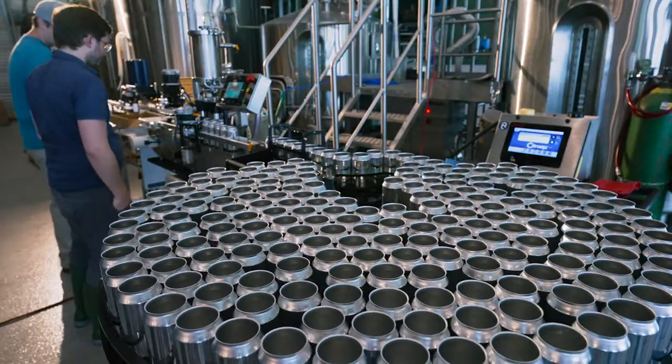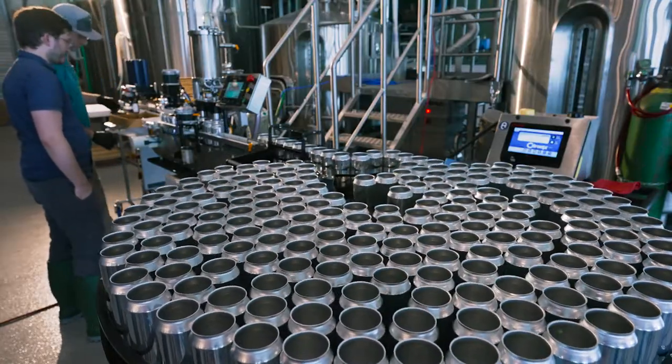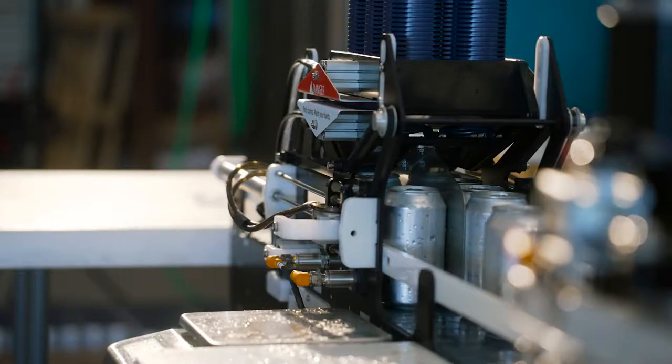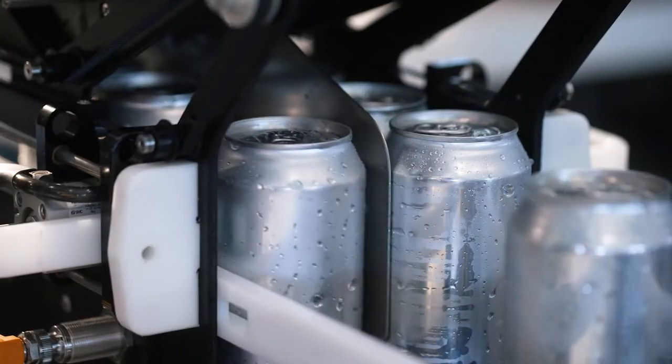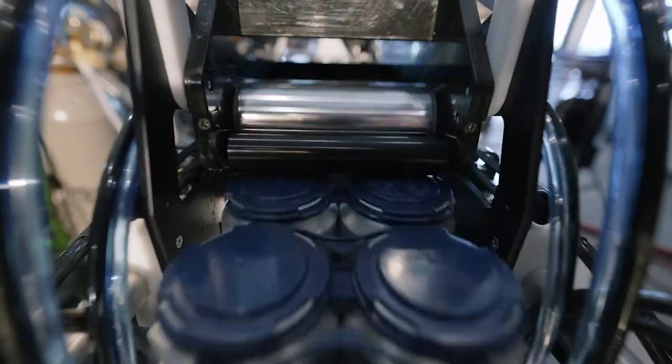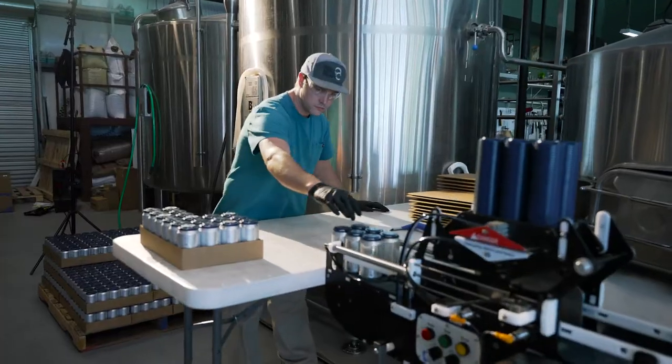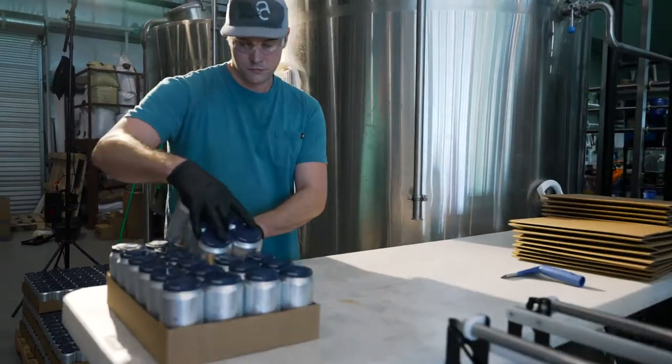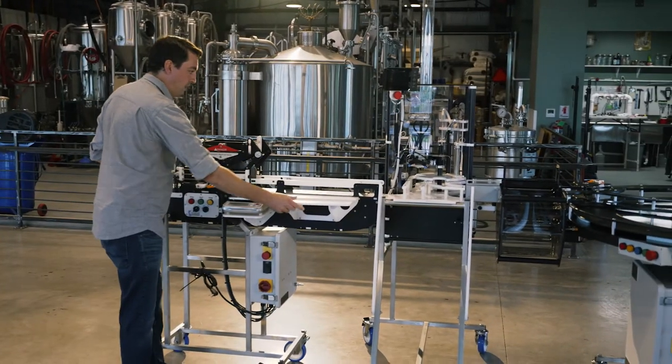As you continue to automate your packaging and do more and more of it, you might want to automate your secondary packaging as well which you can use our PacTech handle applicator which integrates directly into this. Simply remove your rotary accumulation table and bring in a PacTech handle applicator.